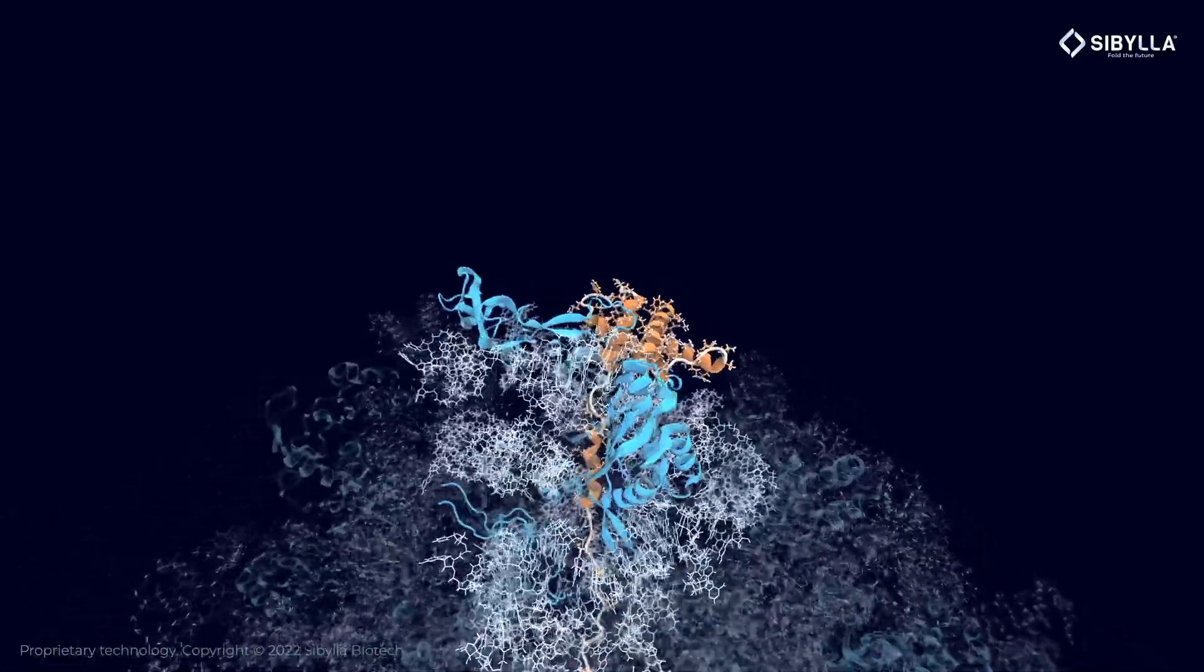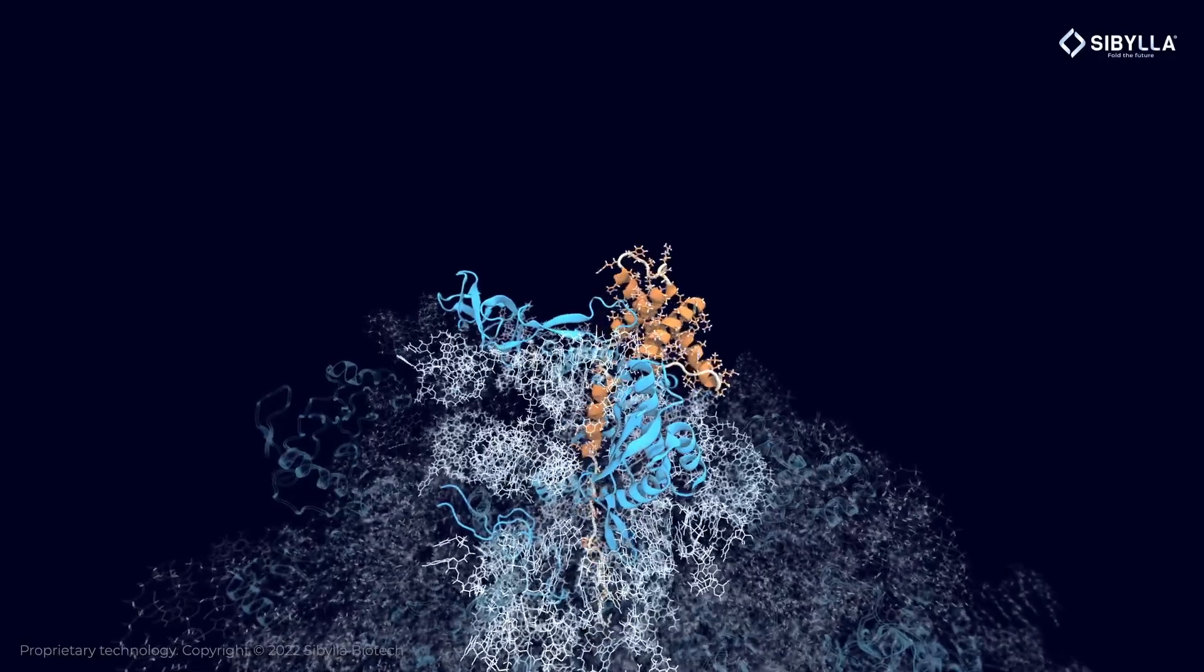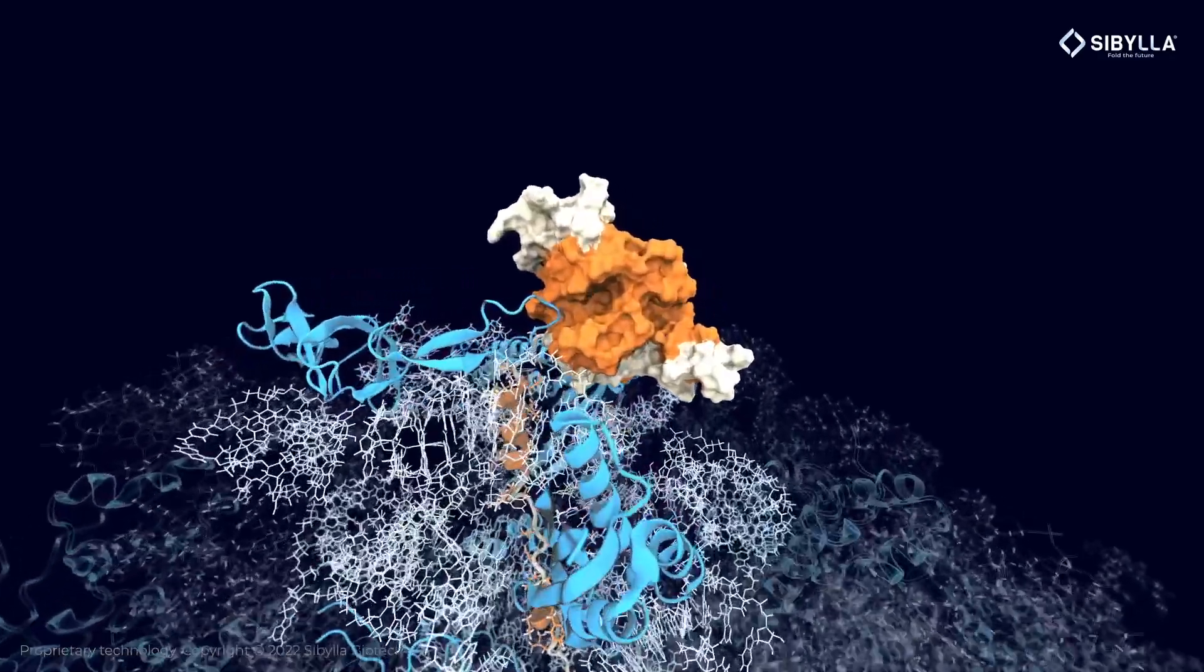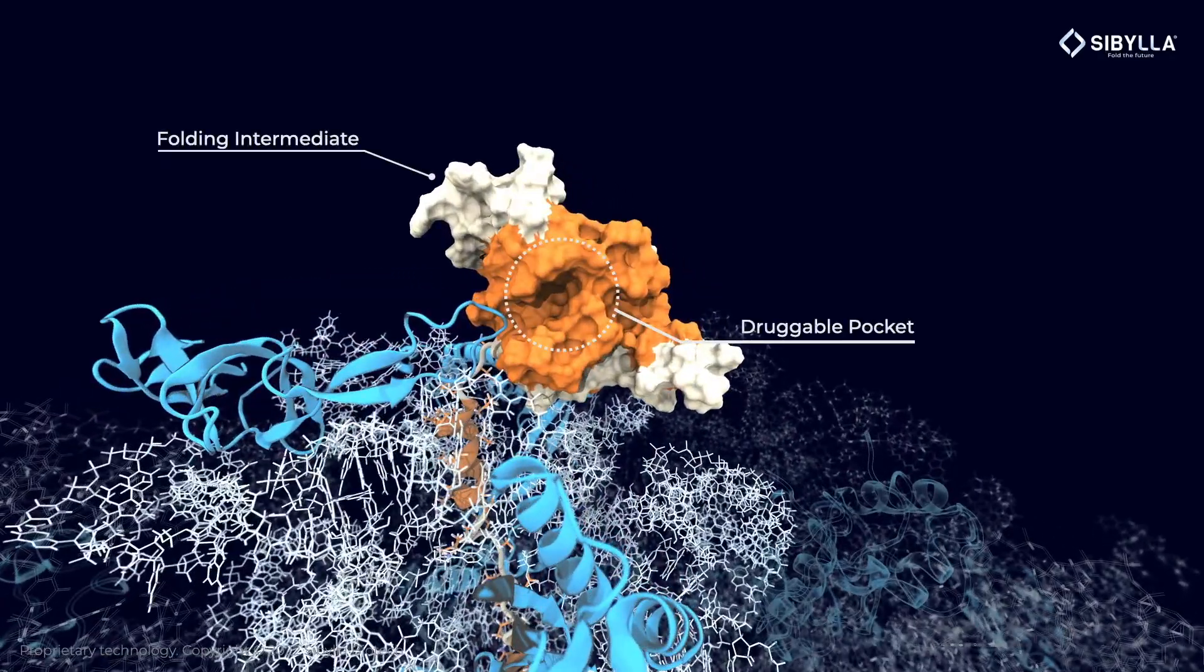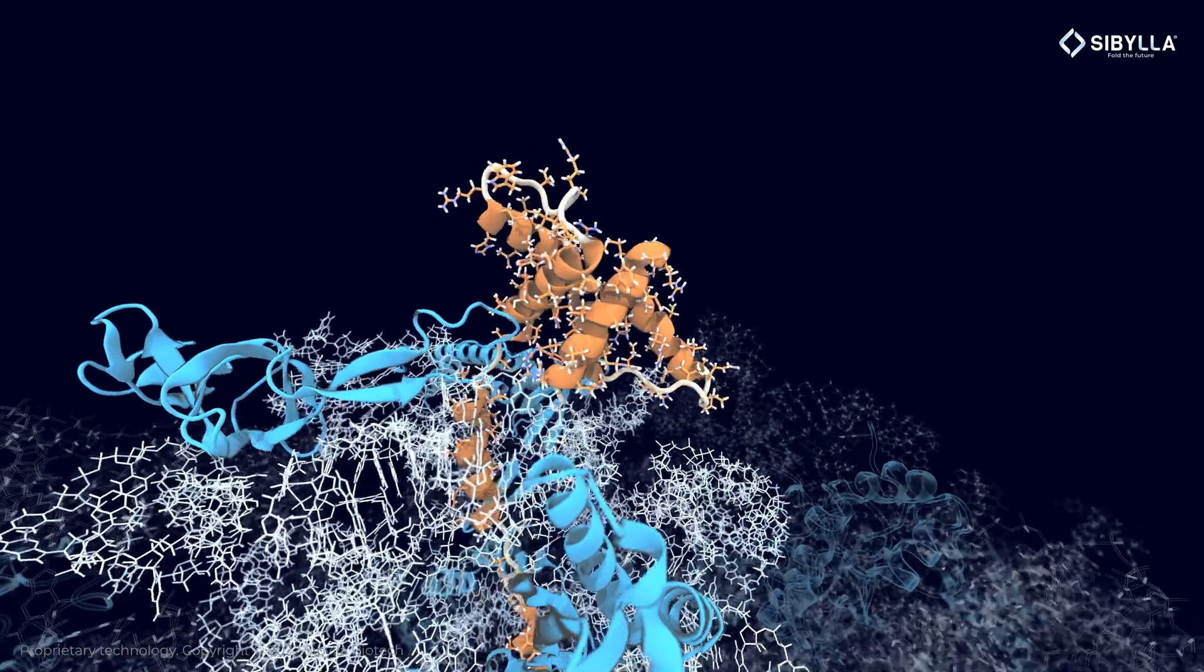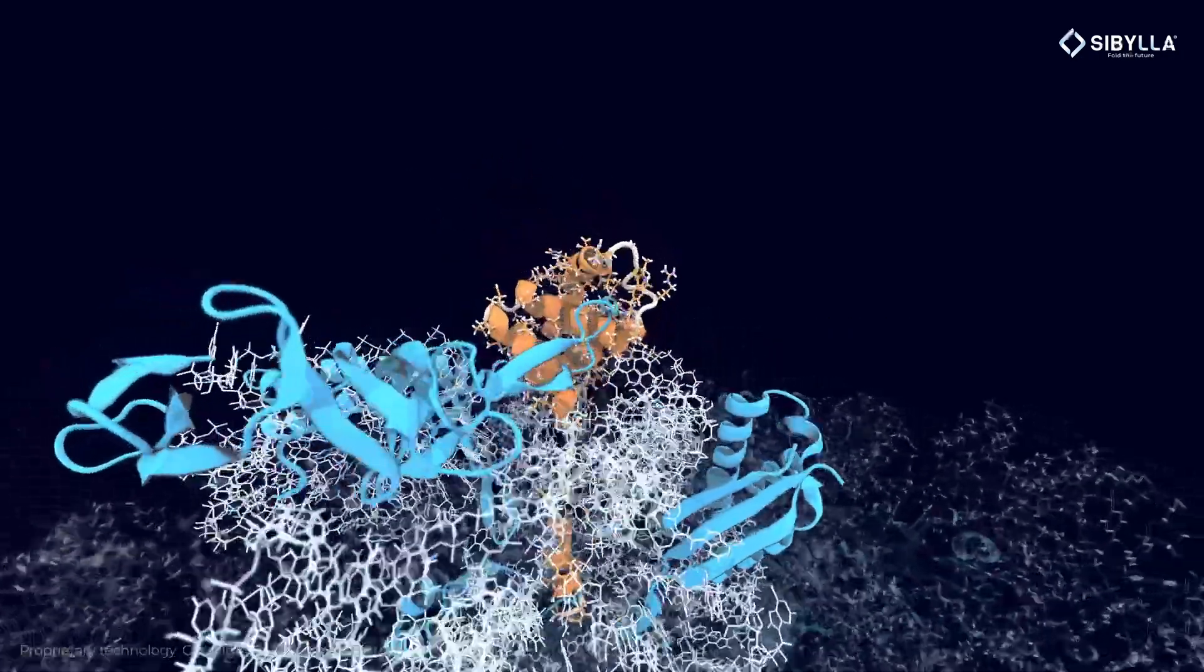Along the folding pathway, metastable folding intermediate states appear. If the structure presents a druggable pocket, a ligand can bind and impair the folding process, leading to the activation of the degradation machinery.